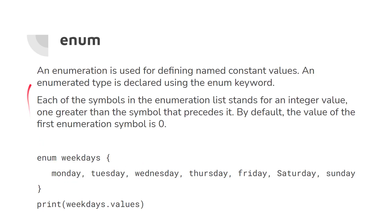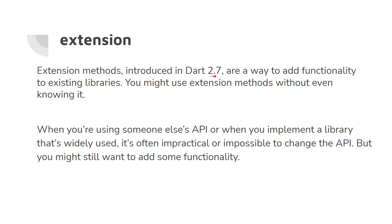'Enum' (enumeration) is used for defining named constant values. An enumerated type is declared using the enum keyword, and each symbol stands for an integer value — just like lists, they have an index starting from zero. For example, 'enum Weekdays { Monday, Tuesday, ... Sunday }' and you can call 'print(Weekdays.values)' to print all values.